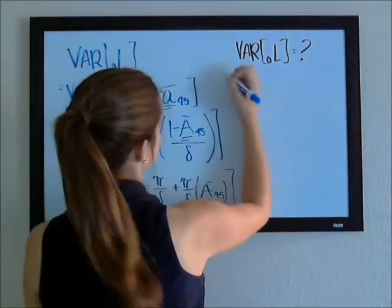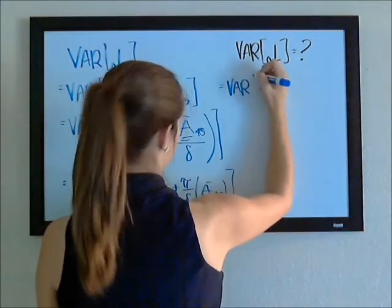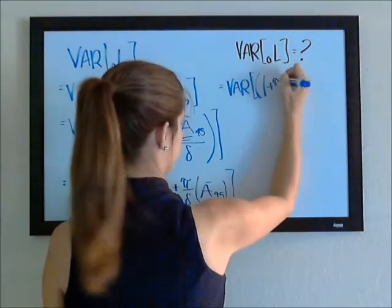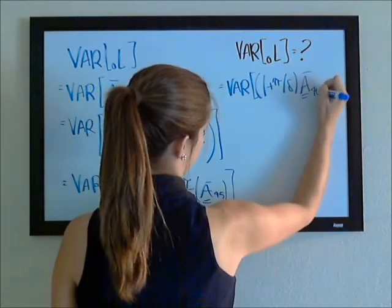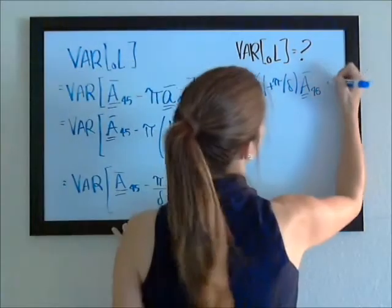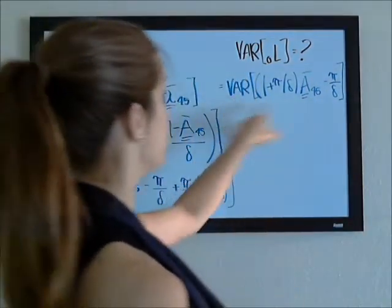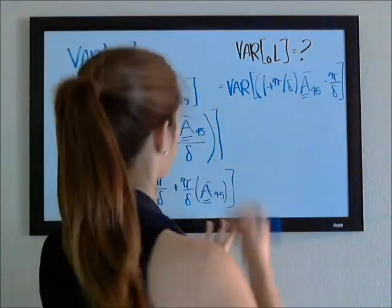which simplifies to the variance of 1 plus premium over delta times the insurance minus the premium over delta. The variance of this constant is 0. This we pull out and square it.